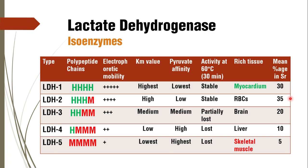To differentiate the sources of LDH elevation, isoenzyme studies are needed using the LDH1 to LDH2 ratio. If the ratio is greater than one, it suggests myocardial infarction. If the ratio is less than one, it indicates RBC pathology, as the LDH2 component will be dominant. The LDH1 to LDH2 ratio is therefore the key diagnostic parameter in isoenzyme studies.